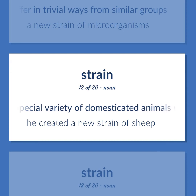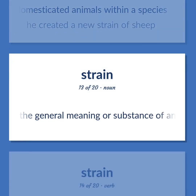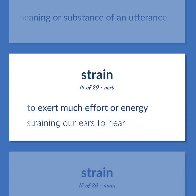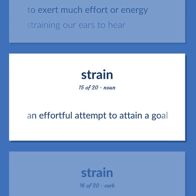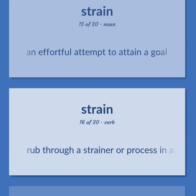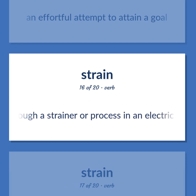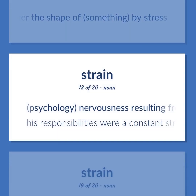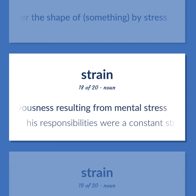A special variety of domesticated animals within a species. He created a new strain of sheep. The general meaning or substance of an utterance. To exert much effort or energy. Straining our ears to hear. An effortful attempt to attain a goal. Rub through a strainer or process in an electric blender. Alter the shape of something by stress. Psychology: nervousness resulting from mental stress. His responsibilities were a constant strain.